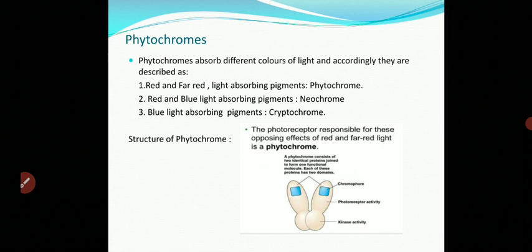Cryptochromes, denoted as CRY, are blue light photoreceptors that mediate various light responses in plants and induce flowering. The photo-excited CRY molecules show conformational changes to propagate light signals, modulating gene expression leading to flowering in plants and many other developmental stages.